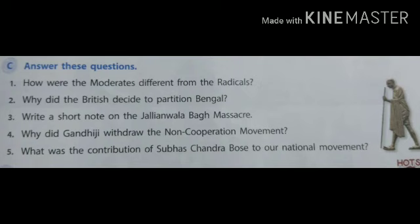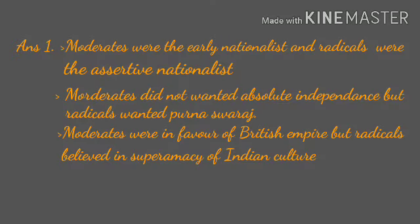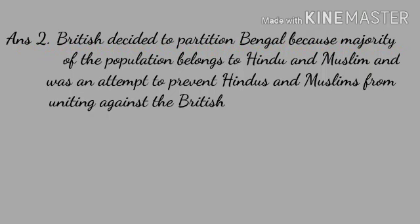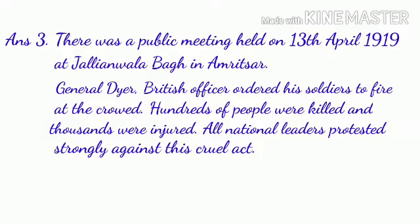Answer these questions. Answer 1: Moderates were the early nationalists and radicals were the assertive nationalists. Moderates did not want absolute independence but radicals wanted complete freedom. Moderates were in favour of the British, but radicals believed in the supremacy of Indian culture. Answer 2: The British decided to partition Bengal because the majority of the population belonged to Hindus and Muslims, and it was an attempt to prevent Hindus and Muslims from uniting against the British.